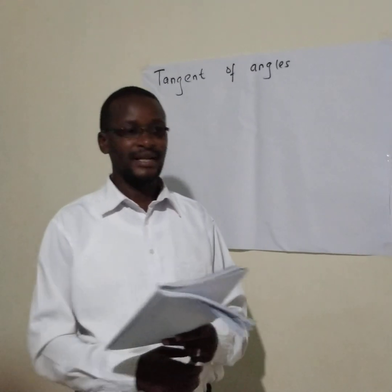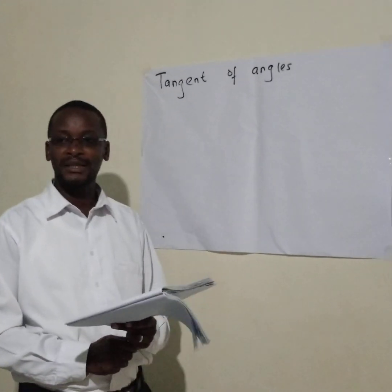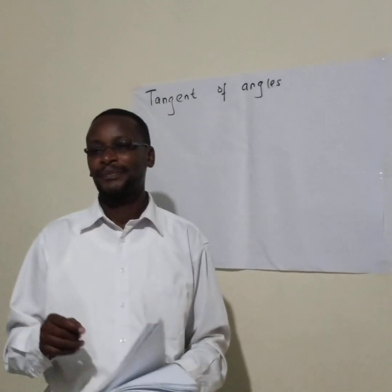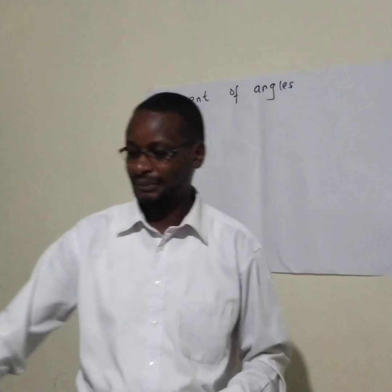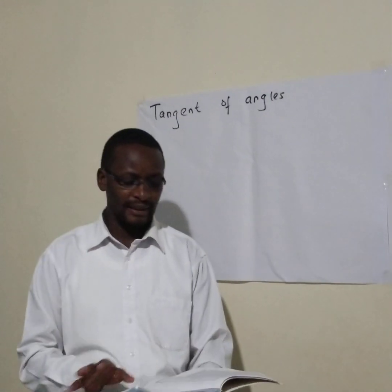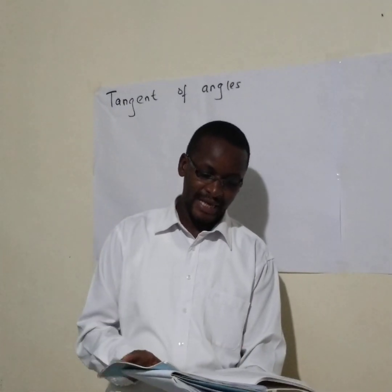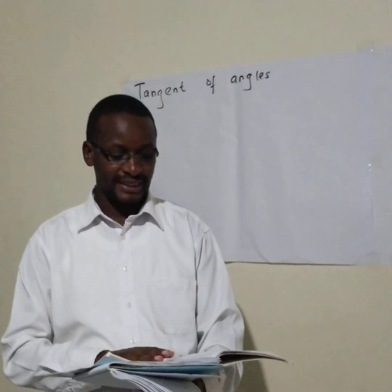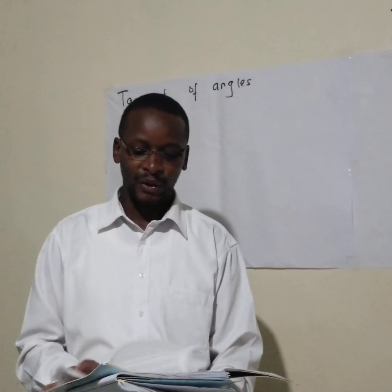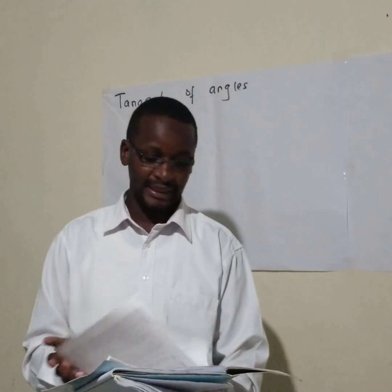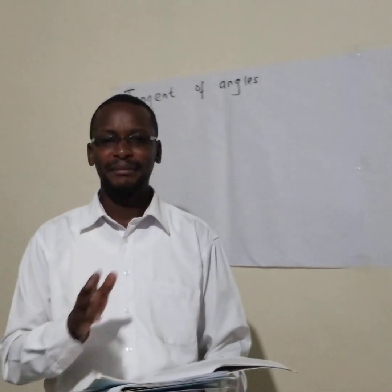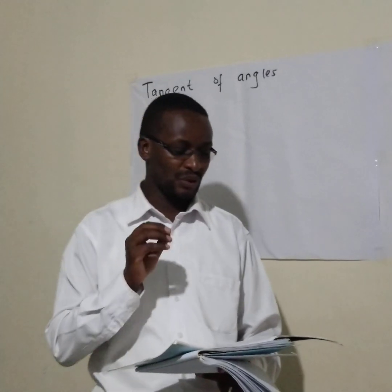We are going to see how you can read tangents from mathematical tables, so I hope you are armed with your mathematical table. Go to your mathematical table and open the page that is written 'natural tangents.' Don't look at logarithm of tangents — it is natural tangents. We are going to use those tables just as you used logarithm tables.